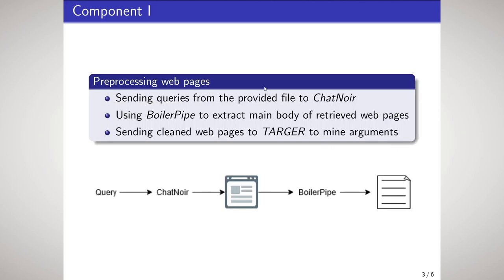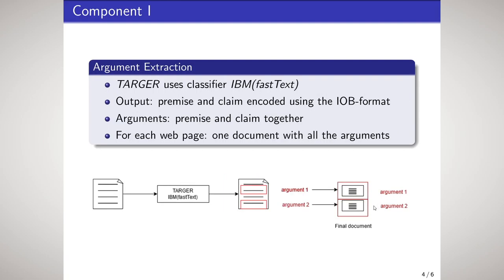My first component is responsible for preprocessing the web pages and mining the arguments. I am sending queries from the provided file to CharNoir, then using boilerpipe to extract the main body of the retrieved web pages, and sending the cleaned web pages to Targa to mine the arguments. Targa uses the classifier IBM FastText, which has been trained on the IBM D-Beta dataset and uses FastText embeddings. It outputs premise and claim encoded using the IOB format. I am then considering arguments to be premise and claim together, storing them in one field, and creating one document per web page containing all the arguments found on that page.